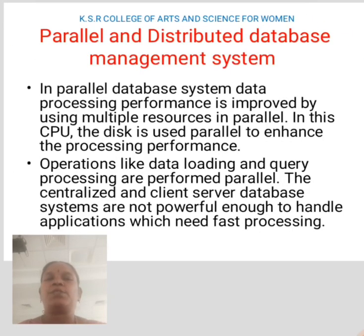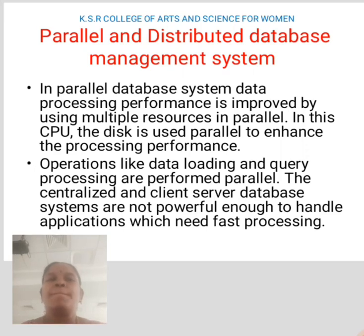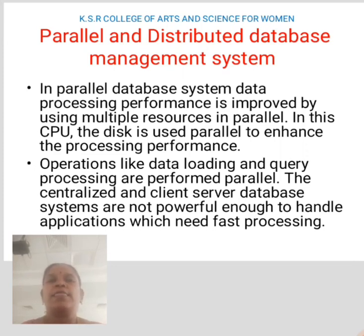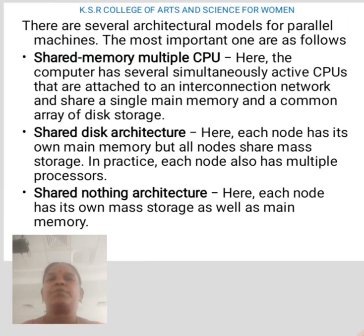Three-tier architecture diagram. Next, we learn about parallel and distributed database management systems. In a parallel database system, data processing performance is improved by using multiple resources in parallel. The CPU and disk are used in parallel to enhance processing performance. Operations like data loading and query processing are performed in parallel. Centralized and client-server database systems are not powerful enough to handle applications that need fast processing. There are several architecture models for parallel machines.